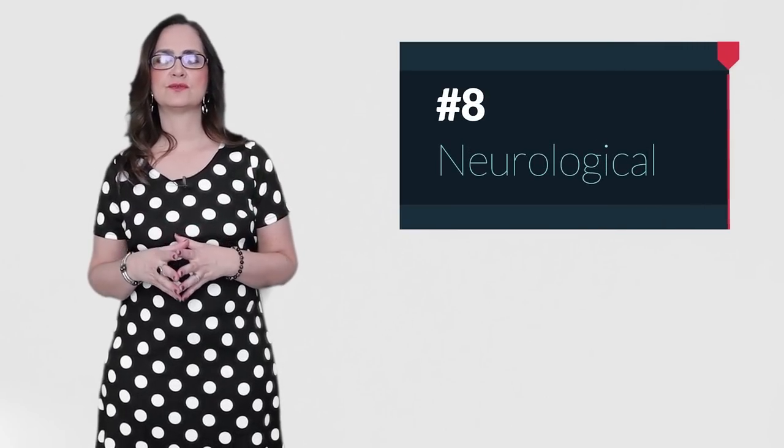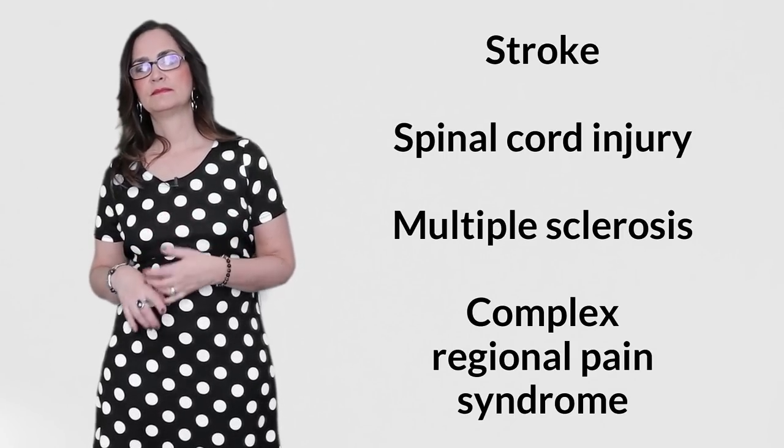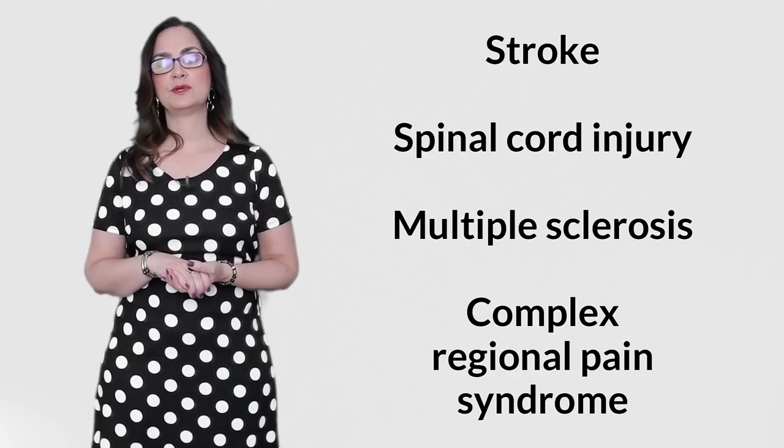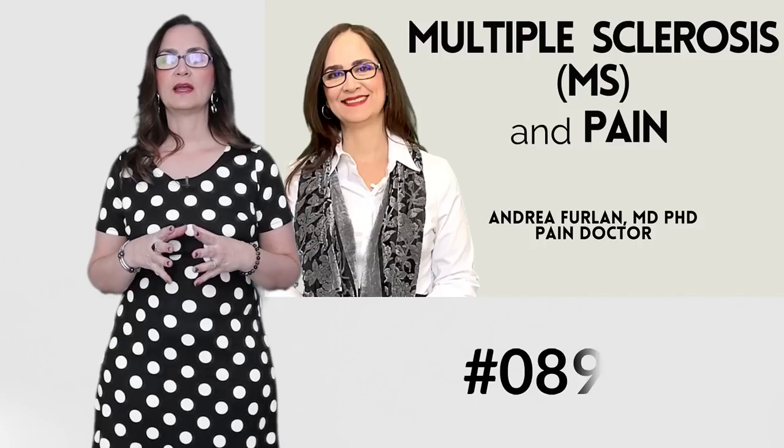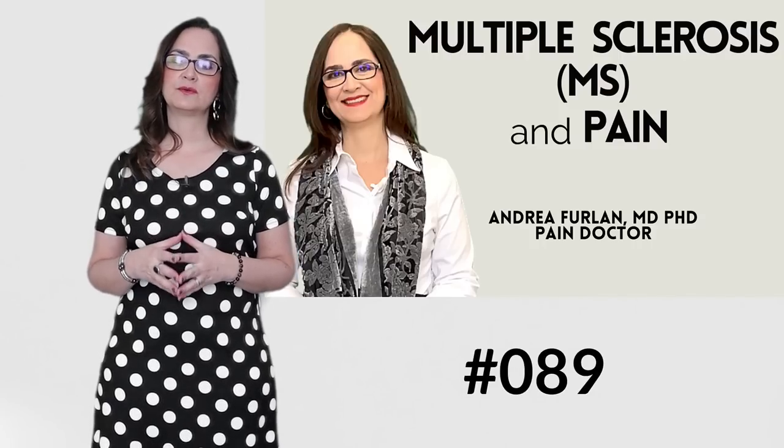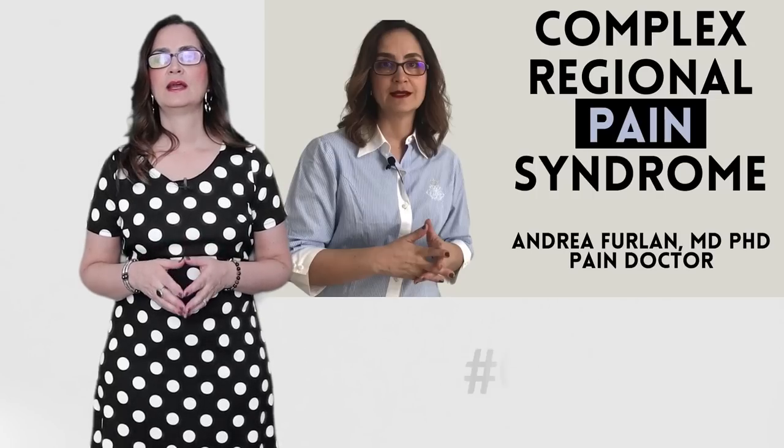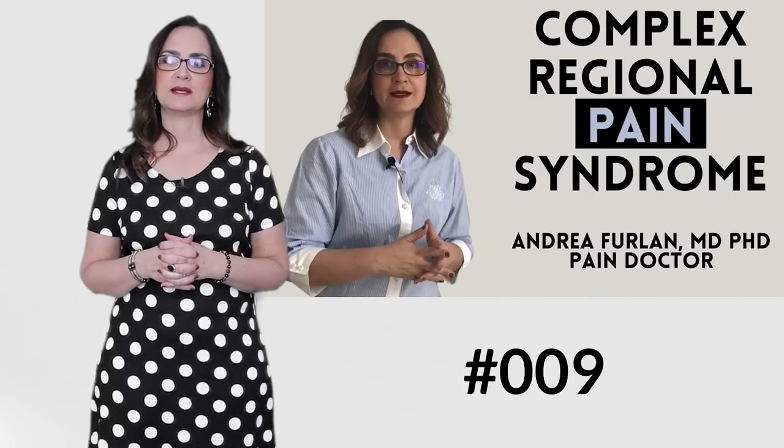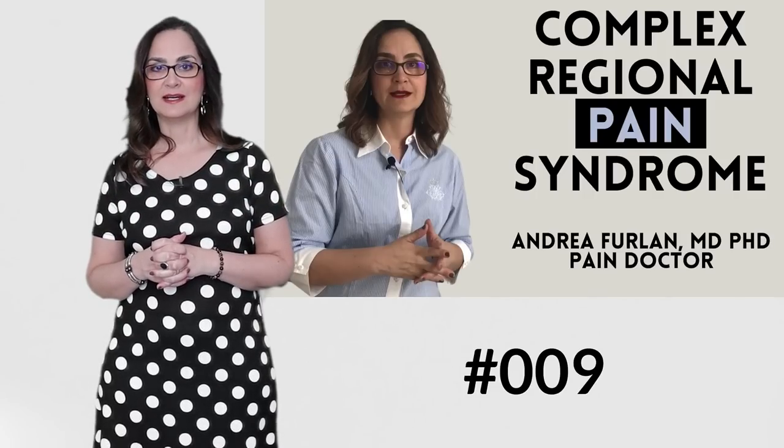Eight, and finally, there are some neurological disorders that affect the shoulder. Examples are stroke, spinal cord injury, multiple sclerosis, and complex regional pain syndrome. I have a video about multiple sclerosis that you can watch. This is number 89. I also have another video to explain what complex regional pain syndrome is, or CRPS. It is video number 9.